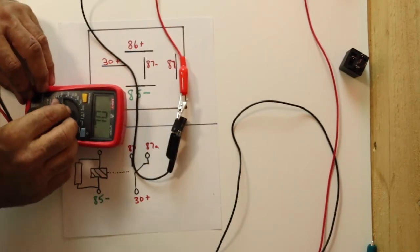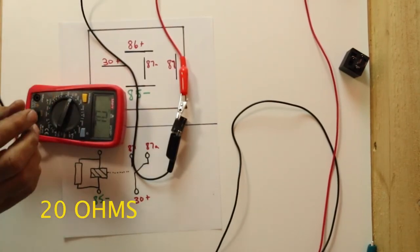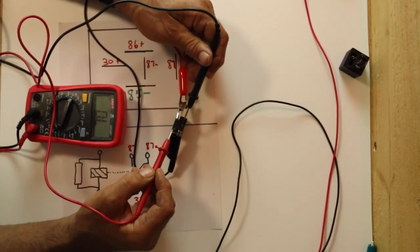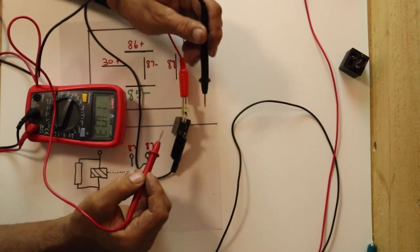Once you activate that circuit, get your meter, put it back on 20. And it should be zero between 30 and 87. And we have zero. Good to go.